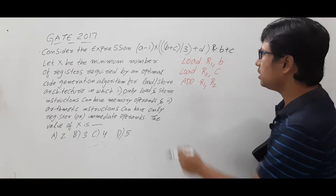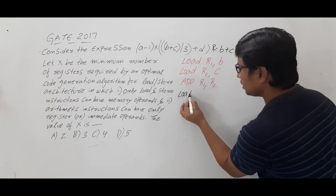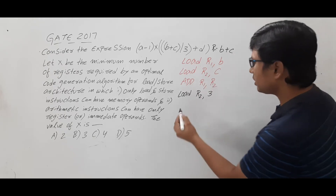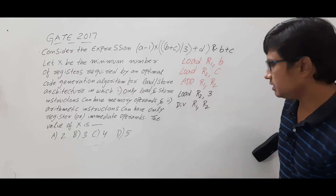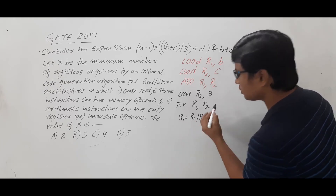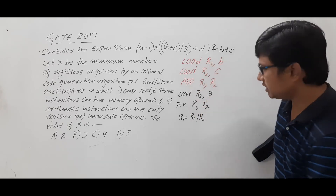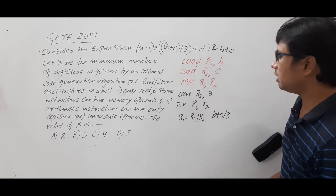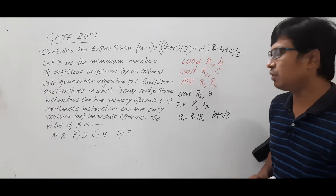Now I need to perform (b plus c) by 3. I will load the value 3 into register r2, then perform the division: r1 = r1 / r2. In r1 we have b plus c, in r2 we have 3, so we are performing (b plus c) by 3. The result is stored in r1, so r1 now holds (b plus c) / 3.